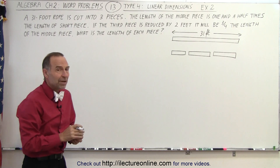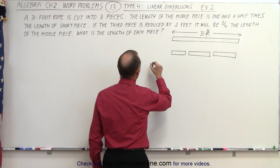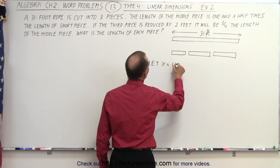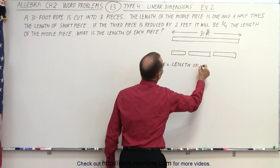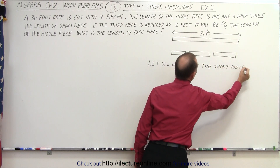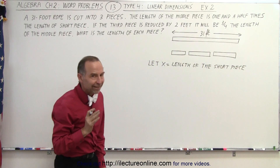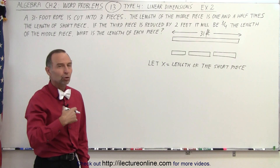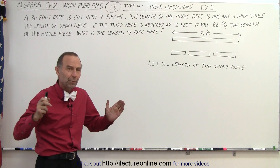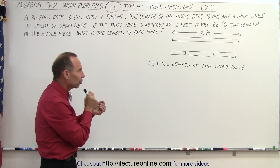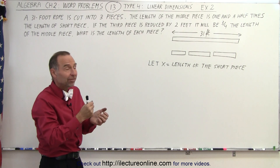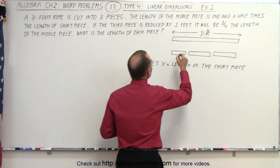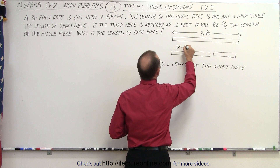It's customary to let X equal the length of the shortest piece. Notice I wrote 'let X equal the length of the short piece' — not just 'the short piece,' because that doesn't define very well what we mean. It's always good to indicate what X represents. In this case, X represents the length of the short piece.